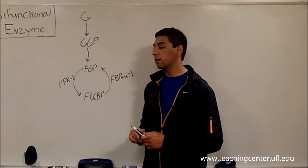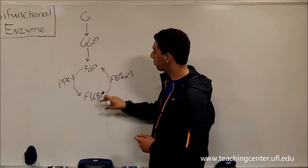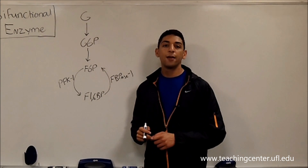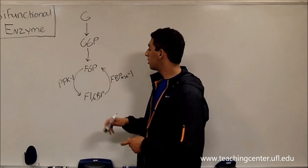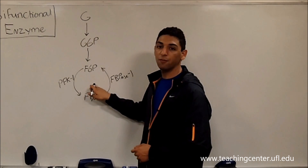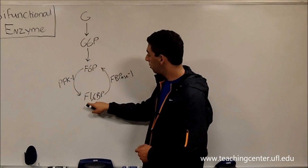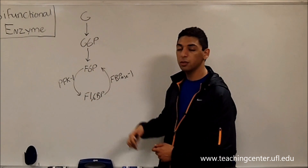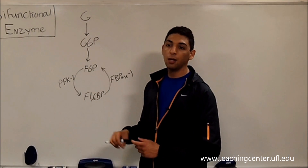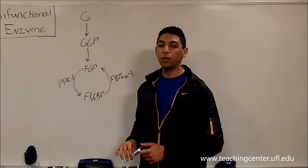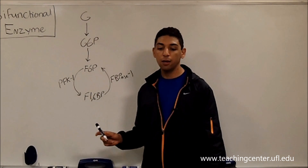The reason for that is because this step — fructose 6-phosphate to fructose 1,6-bisphosphate — is very highly regulated because it is an ATP investment. Going in this direction, fructose 6-phosphate to fructose 1,6-bisphosphate, we use ATP. And as we know, we like to regulate the steps where we use ATP a lot.